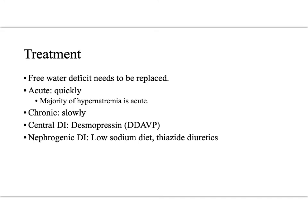Hypernatremia is a water problem, and it tends to be a free water deficit. We need to first calculate what the free water deficit is and then replace it. If hypernatremia develops acutely, we can quickly treat it — and the vast majority of hypernatremia will be acute. If it's chronic, we have to take our time, as there's been a shift in the osmolites. When it comes to central diabetes insipidus, we give desmopressin or DDAVP, which is another form of ADH, in order for patients to concentrate their urine. For nephrogenic DI, it's more difficult — these patients need a low sodium diet and thiazide diuretics. It's believed that thiazide diuretics cause an increase in proximal tubule water and sodium reabsorption, and because there's less water and solute being delivered to the collecting duct, there will be less water actually lost in the urine. So this is just a quick review of hypernatremia. Hope this helps.